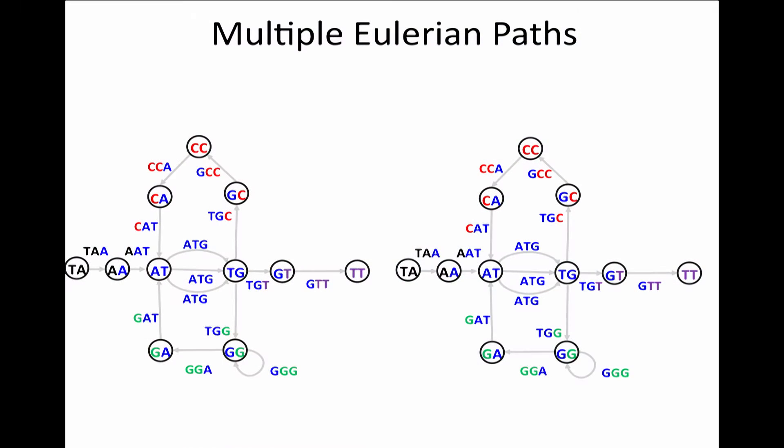But he forgot to tell you one important thing. There can be multiple Eulerian paths in the de Bruijn graph. Even in this simple de Bruijn graph, there are two Eulerian paths. Here they are.